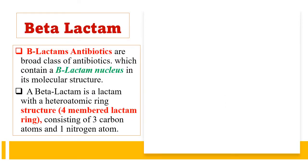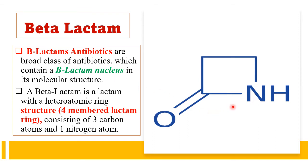Beta-lactam antibiotics are those which contain the beta-lactam ring nucleus in their chemical structure. The beta-lactam ring nucleus is a heterocyclic ring structure containing a four-membered ring with three carbon atoms and one nitrogen atom. Overall, a beta-lactam is a four-membered heterocyclic ring in which three carbon atoms are directly bonded with the heteroatom.